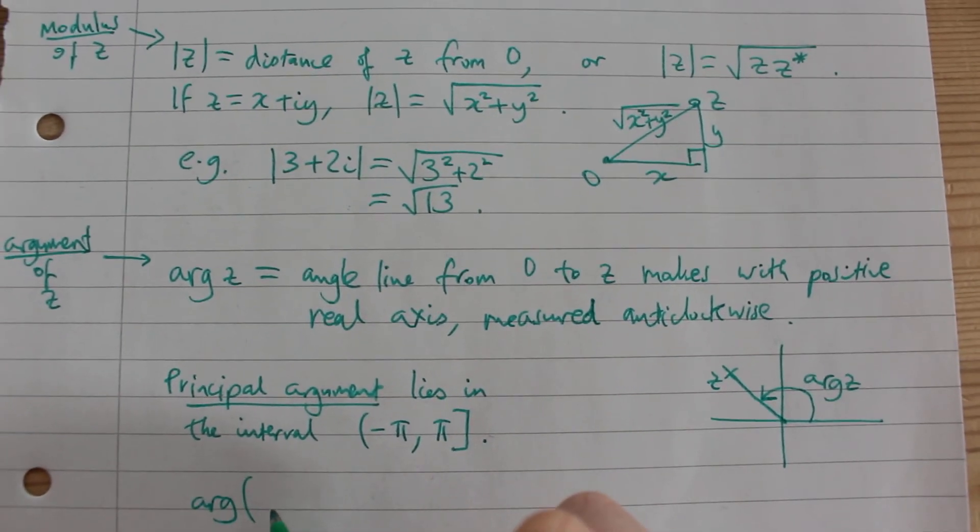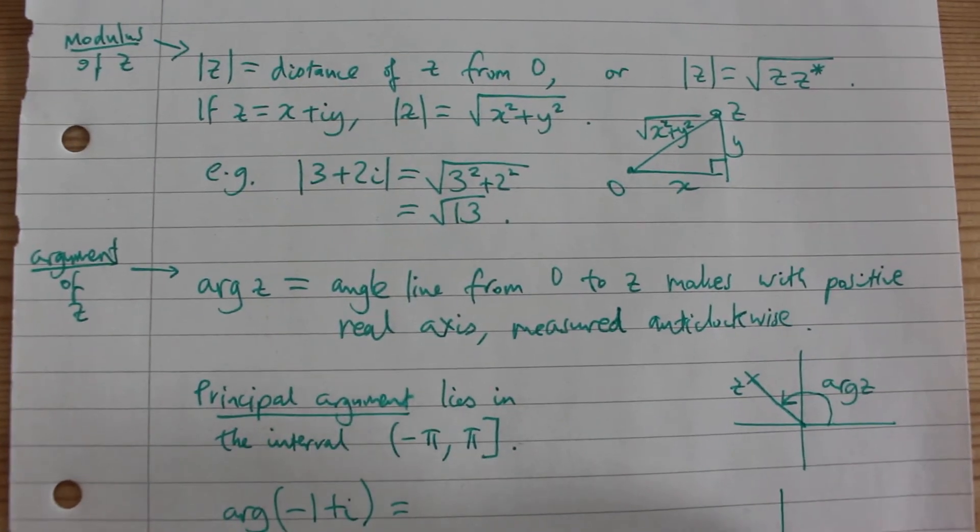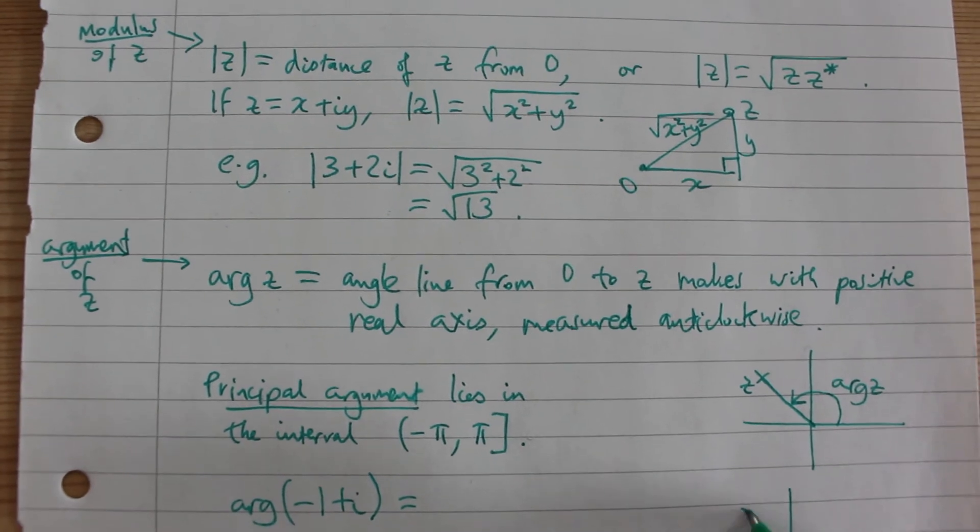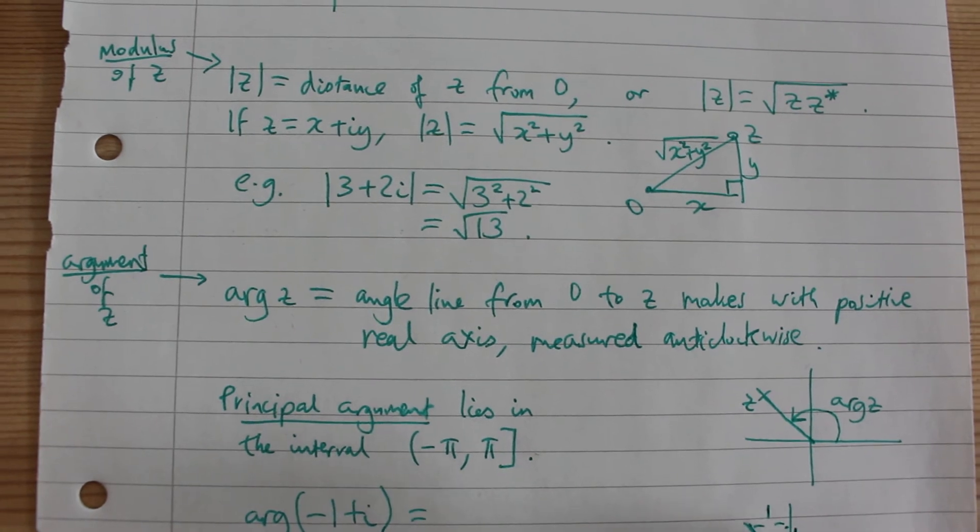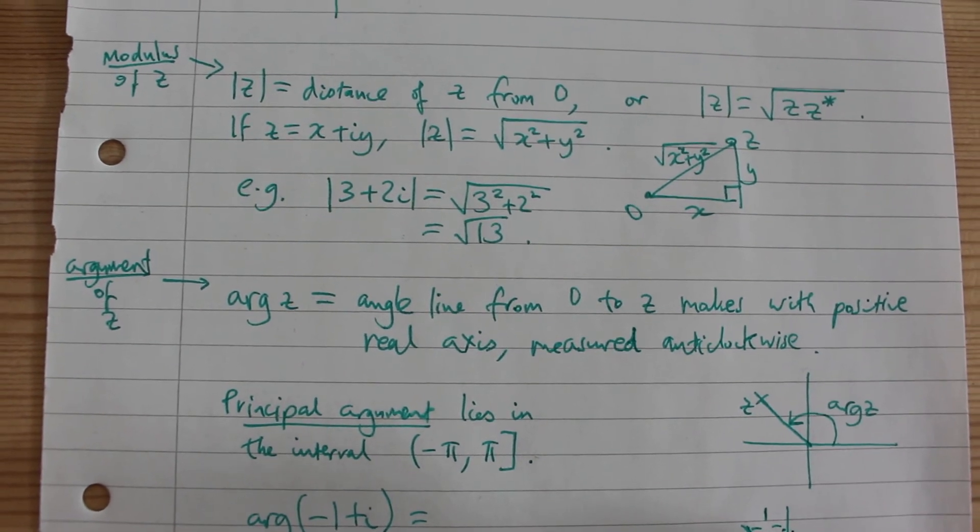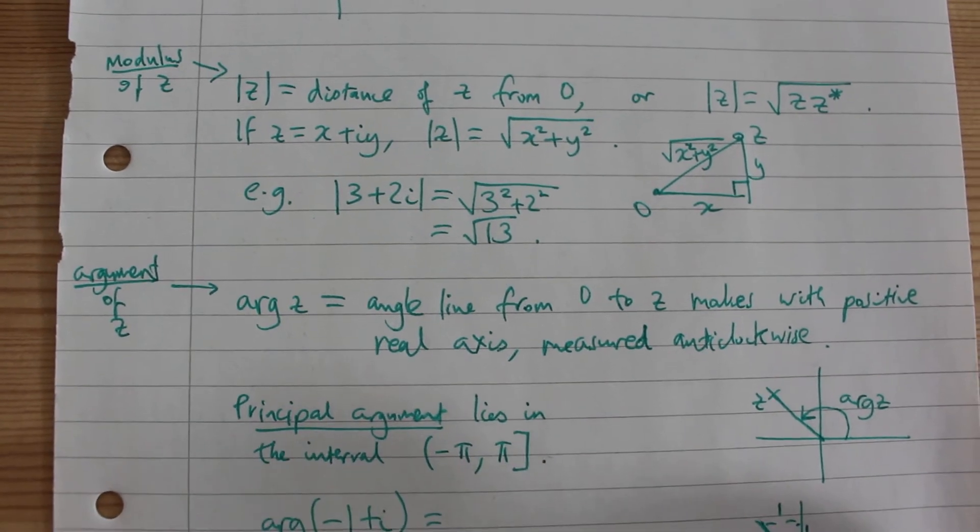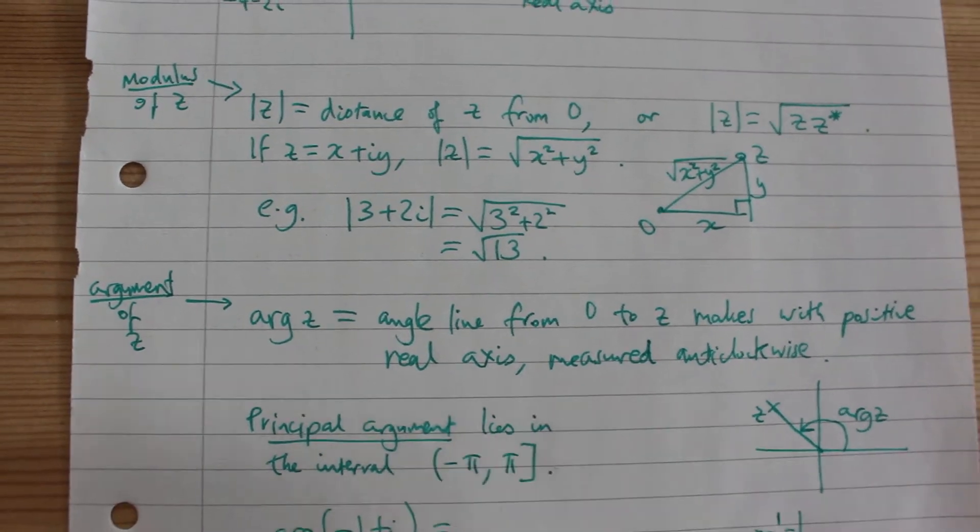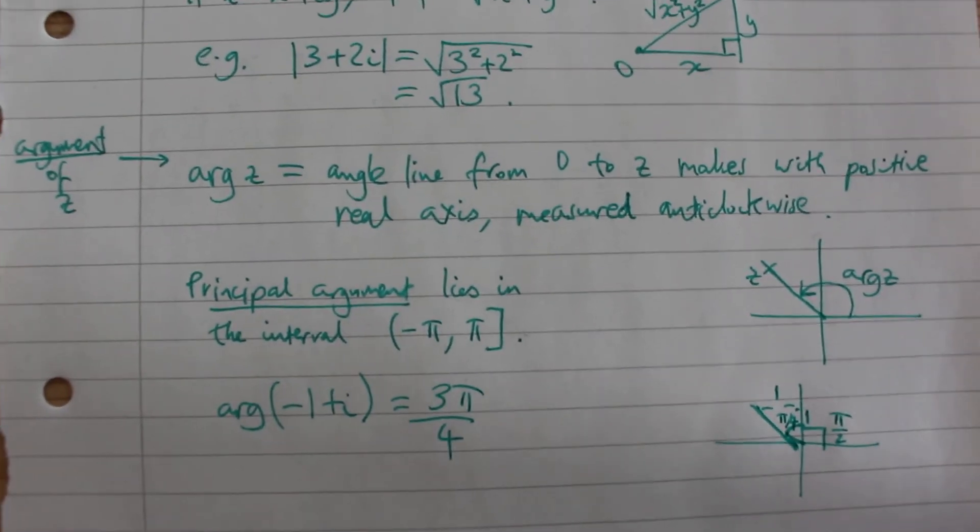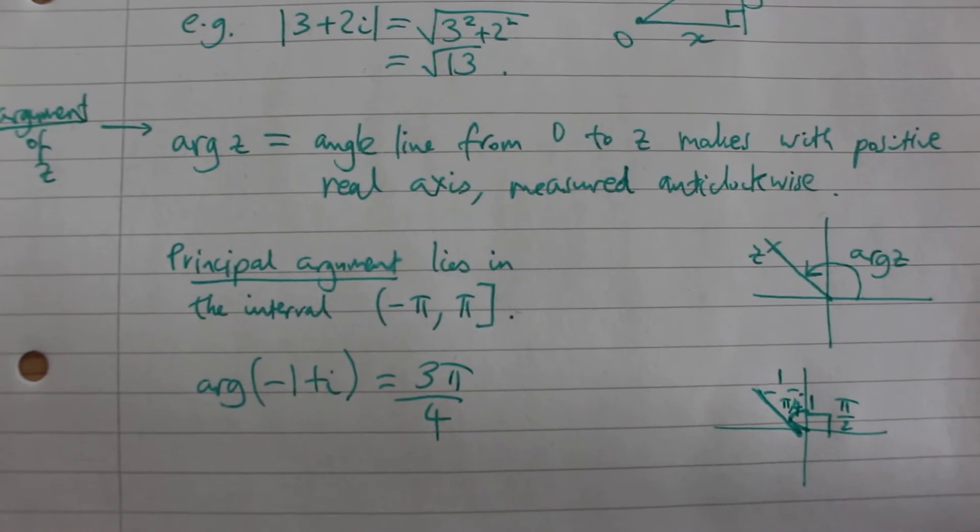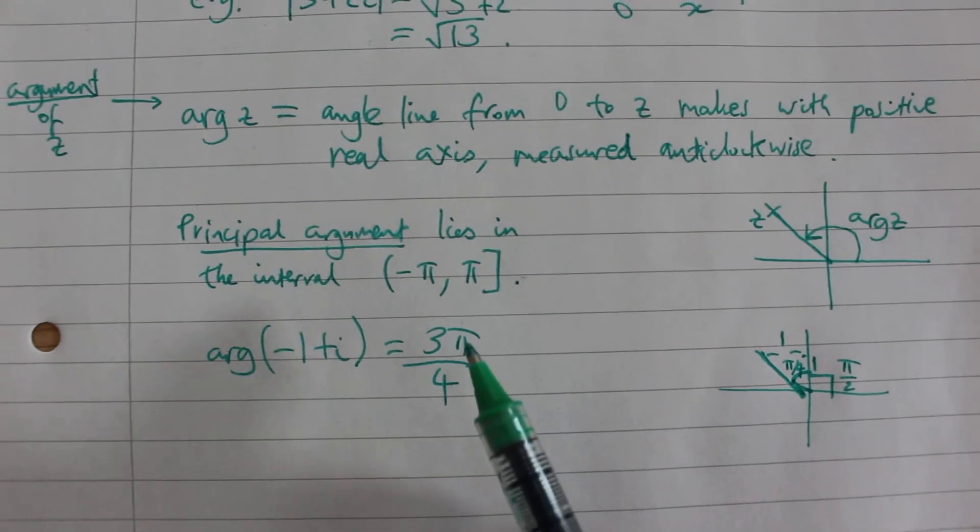For example this number here, if we think about minus 1 plus i, then we know this is 90 degrees, this is 1 and this is 1 so this is pi by 4. So the argument is pi by 2 plus pi by 4, so the argument is 3 pi by 4. But we could also add multiples of 2 pi and it wouldn't change the argument. But the principal argument would be 3 pi by 4.